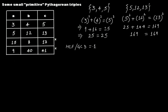So what then is the opposite of primitive Pythagorean triples? That's a really good question, and the answer is: imprimitive Pythagorean triples. It's just the opposite of primitive — in this case the highest common factor or greatest common divisor will not be equal to 1; in fact it will be some other positive integer.